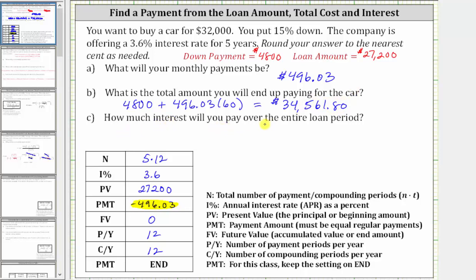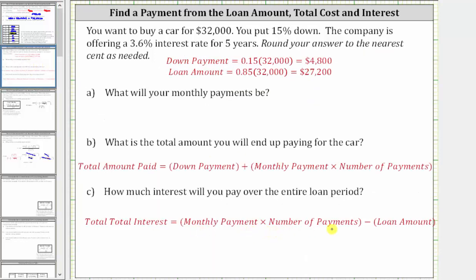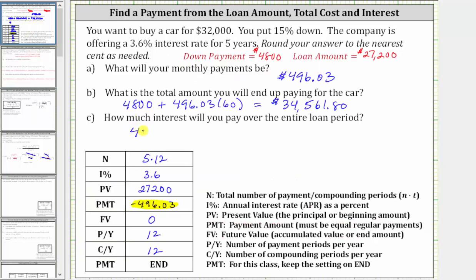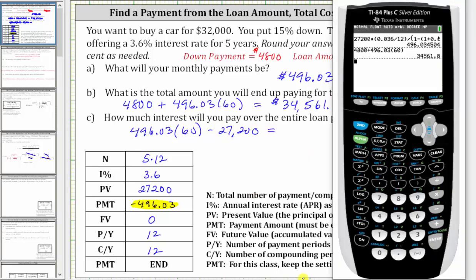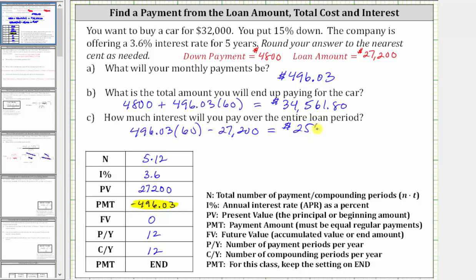For part C, how much interest will you pay over the entire loan period? One way to find this is to take the monthly payment times the number of payments and subtract the loan amount: $496.03 times 60, minus $27,200. Going back to the calculator, we get $2,561.80. We could have also determined this by taking the total amount paid from part B and subtracting the price of the car, $32,000. I hope you found this helpful.